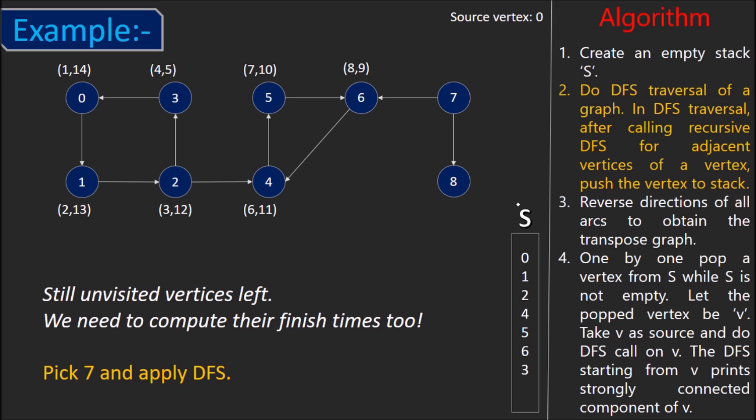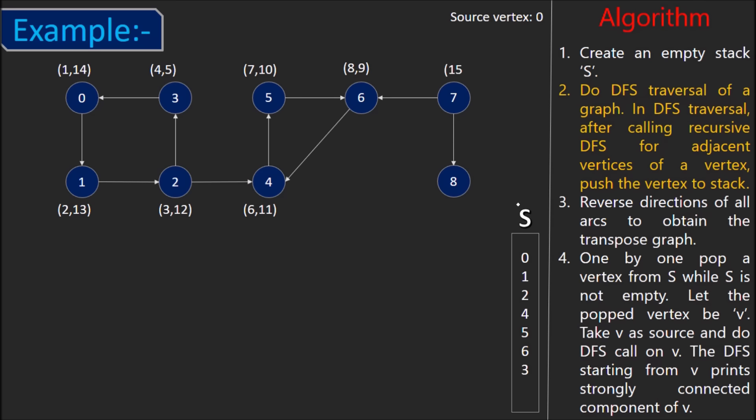We pick vertex 7 and apply DFS to it. Now, start time of 7 would be 15. 8 starts at t equals 16 and finishes at t equals 17 because it doesn't have any unvisited neighbors. Our last vertex 7 finishes at t equals 18.